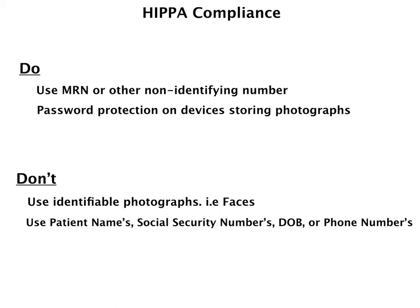It's always best to assume that our photos will be considered protected health information just to cover ourselves. For HIPAA compliance, there are a couple of do's. You want to use medical record numbers or other non-identifying numbers, such as a proprietary chart number or patient identification number. You also want to make sure that you have password protection on devices storing the photograph — a passcode on your iPhone or a password on whichever programs you are using. You don't want to use identifiable photographs, and you definitely never want to use the patient's name, social security number, date of birth, phone number, or any other identifying information.